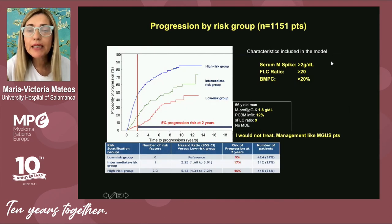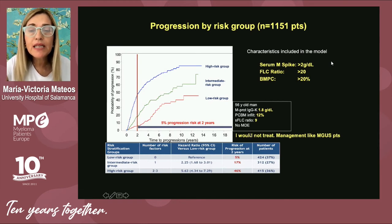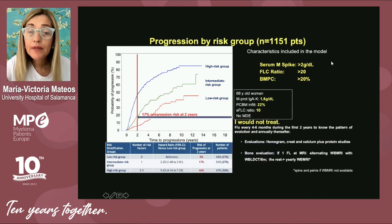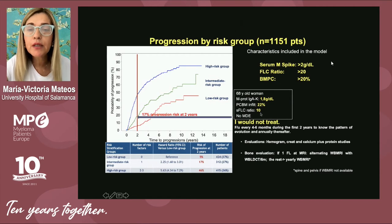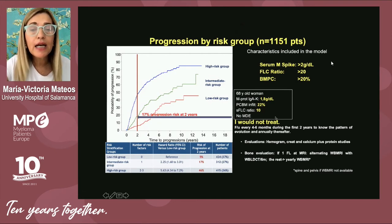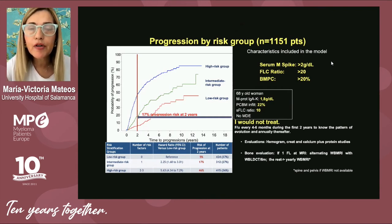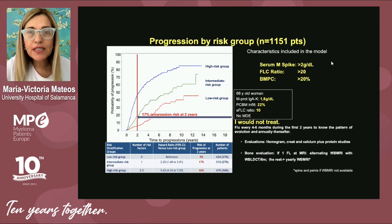As an example: a 56-year-old man with M component 1.8, plasma cell bone marrow infiltration 12%, serum free light chain ratio 9, no myeloma defining events — risk of progression 5% at two years. I would not treat this patient; follow-up once per year is appropriate. A second patient: a 68-year-old woman with M component 1.8, plasma cell bone marrow infiltration 22%, serum free light chain ratio 10 — risk of progression 17% at two years. I would not treat her either, but would follow every four to six months during the first two years, then annually, evaluating hemogram, biochemistry, and protein studies at each visit.